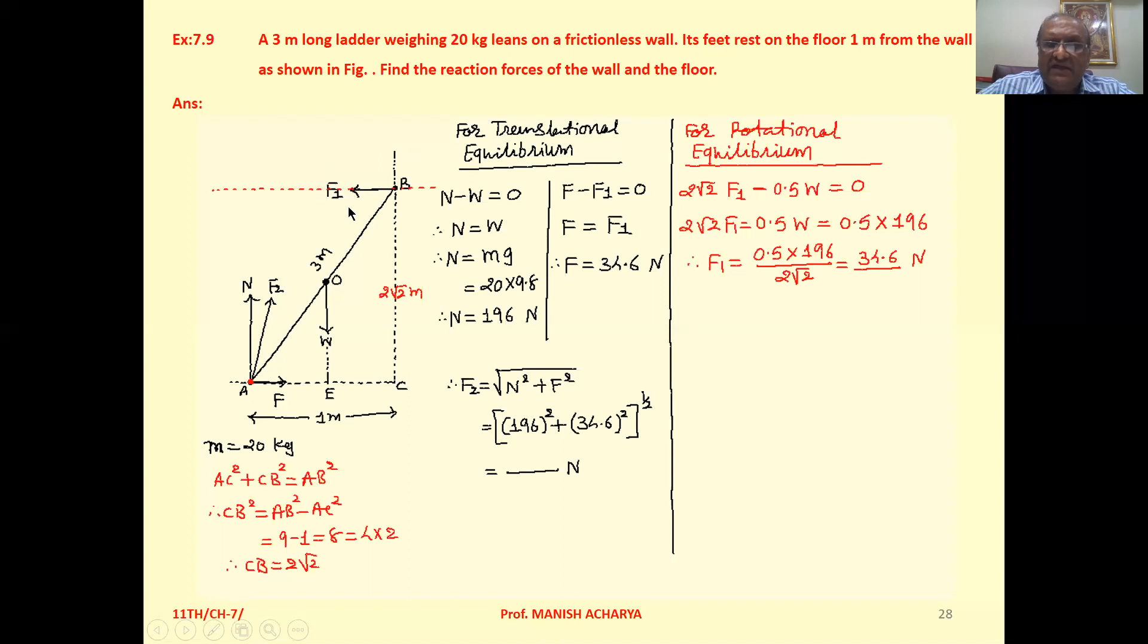This is the reaction. Then here at the floor, suppose the reaction by floor at the end of the ladder is F2. Now friction at the floor is F, towards AC, because if friction is not there then ladder will slip off. Friction is always in the opposite direction of impending motion. And this end has the normal reaction.